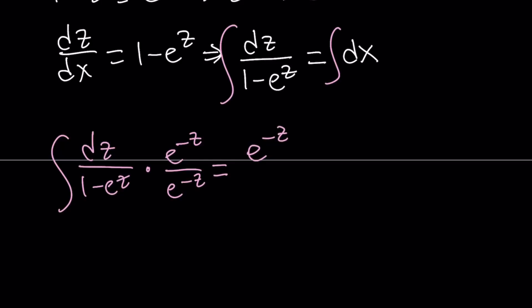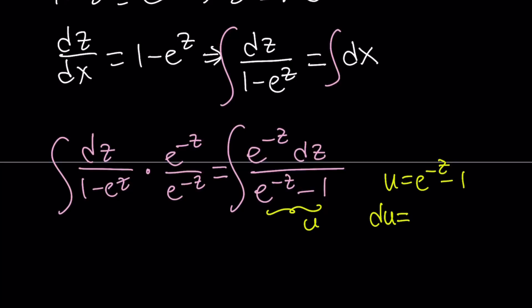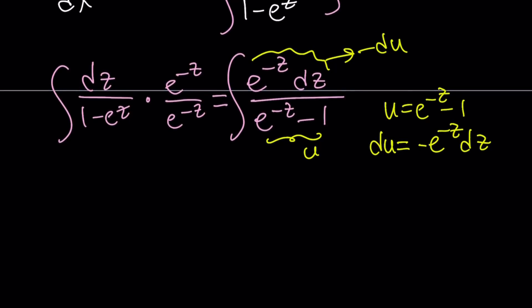That gives us e to the power of negative z dz divided by — if you distribute the e to the power of negative z — you're going to get e to the power of negative z minus 1. Now we have to integrate this, but integrating this is definitely easier than the previous one. So we're going to call this u. So u equals e to the power of negative z minus 1, and du becomes the derivative times dz. The derivative is negative e to the power of negative z. We do have e to the power of negative z dz, so this is just going to become negative du.